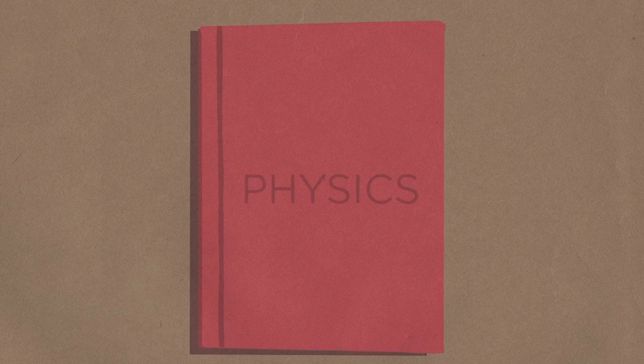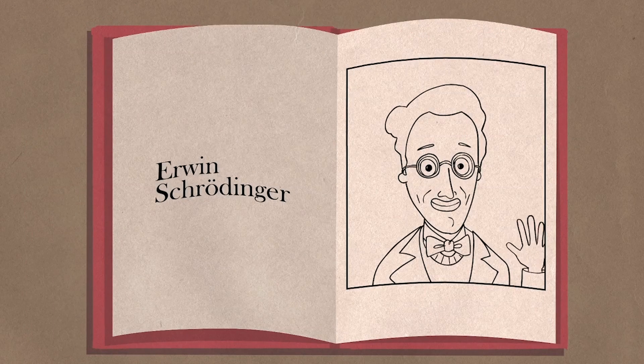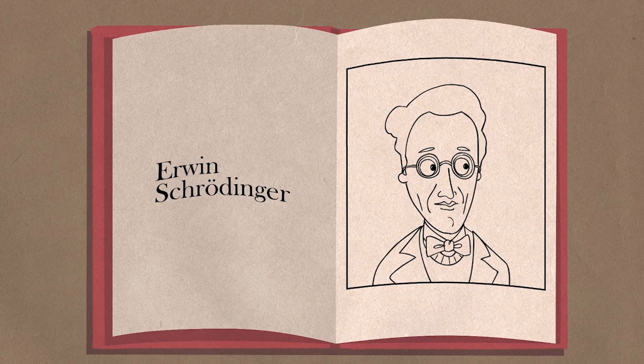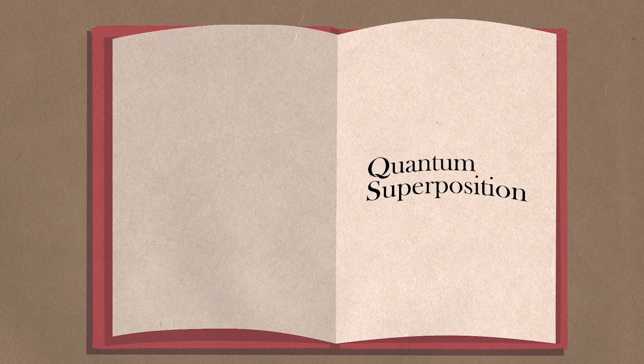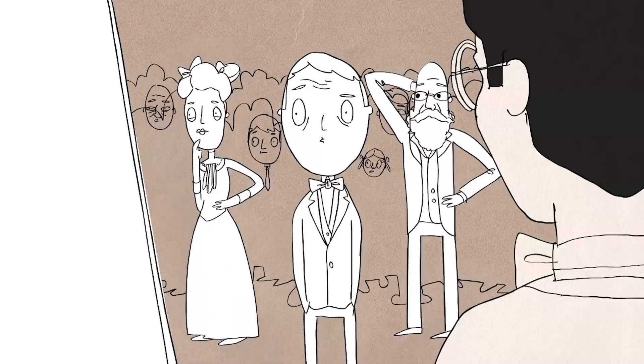I was really into physics when I was in college, and Erwin Schrödinger was this Austrian scientist who was trying to explain to people this idea of quantum superposition, which sounds really crazy.